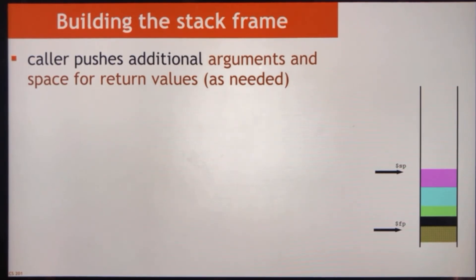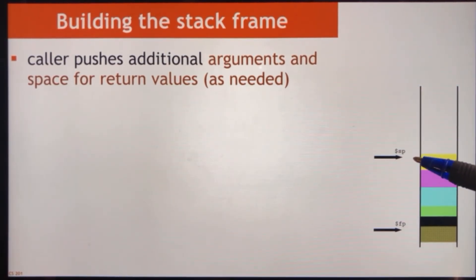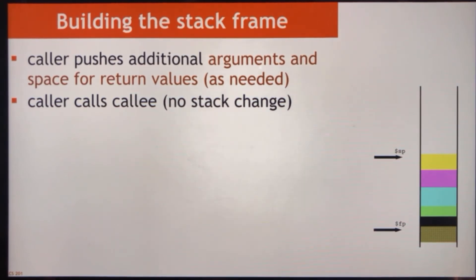If you want to call a procedure, the first thing you do is push onto the stack any arguments you want to send to the procedure and any space for return values you expect back. You can use registers for this, but this more general approach allows more than four arguments and more than two return values, as well as chained procedure calls. We push arguments and space for return values, subtracting the stack pointer and storing with SW. Then we call the procedure using jump and link, storing the current program counter in the return address.